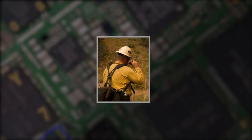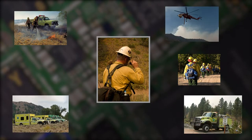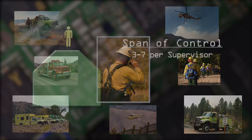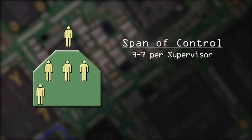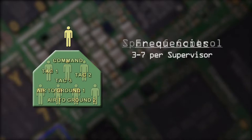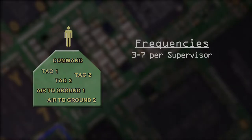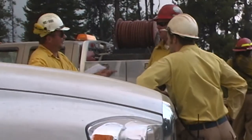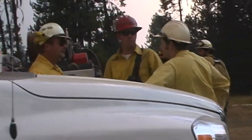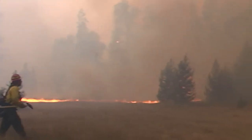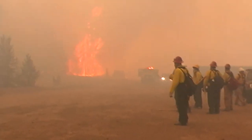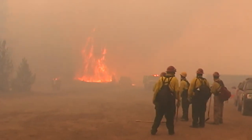The incident command system refers to the number of resources that one person can effectively manage. It's fair to say that span of control guidelines also apply to the number of frequencies you are managing. When I arrive on a fire dispatched as an initial attack IC, it doesn't really matter the complexity — in my mind the rules are the same. I have a command channel and I build the organization. I utilize the incident command system and, based on my needs, I start giving tactical frequencies to the divisions or to the single resource bosses.